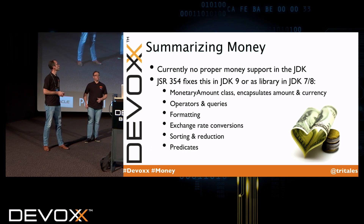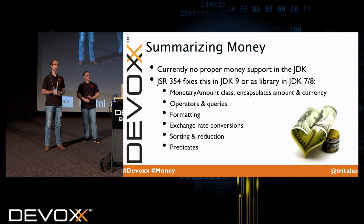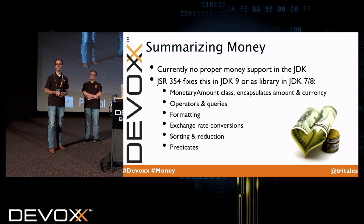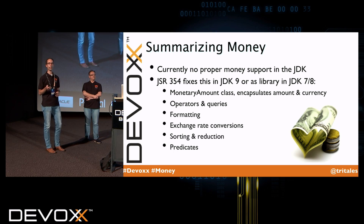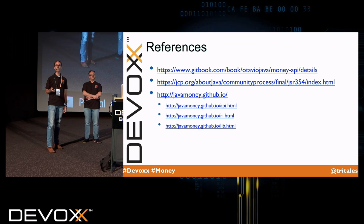So we've reached the end of the presentation. To summarize: currently there's no proper monetary amount support in the JDK, and this is fixed by JSR 354 — the Money and Currency API — in JDK 9. The standalone API is available in JDK 7 and 8 in combination with the Moneta reference implementation. It provides the MonetaryAmount class encapsulating value and currency with operations, operators, queries, formatting, exchange rate conversions, sorting, reduction, and predicates. 15 minutes is a bit too short to cover the complete JSR, so you can read more at the references. We will make the presentation available on SlideShare — please visit the link on our website.